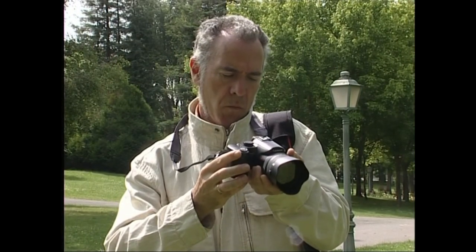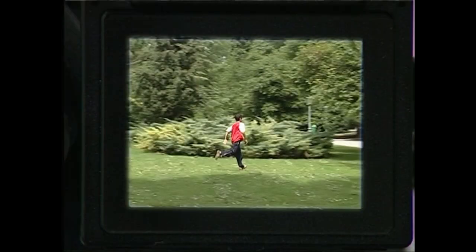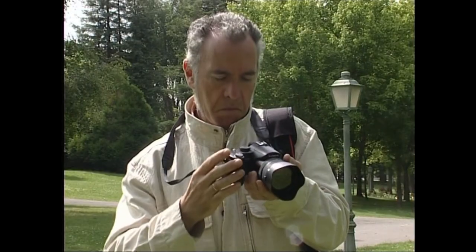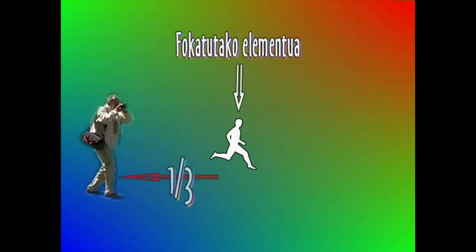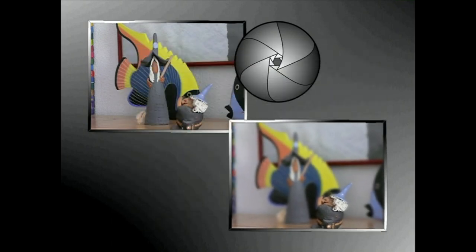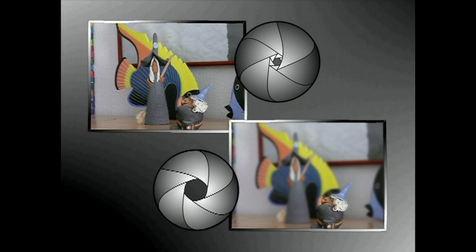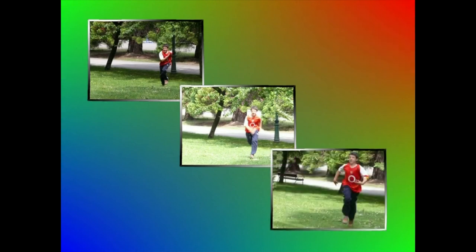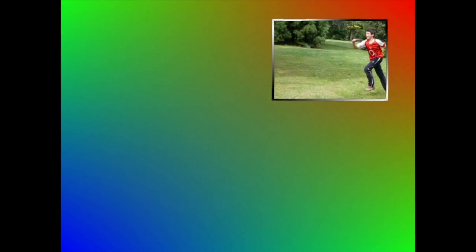Horrezaz gainera, gogoratu argazki laritza klasikoan bezala, diafragmaren irekidurak ezartzen duela eremu sakonera edo argazkiaren garbitasun gunea. Garbitasun gune hori fokatutako elementutik aurrerantz eren bat eta atzerantz bi eren luzatzen da. Beraz, diafragmaren irekidura zenbat eta txikiagoa izan, orduan eta eremu sakonera handiagoa izango dugu. Eta alderantziz, diafragmaren irekidura zenbat eta handiagoa izan, orduan eta eremu sakonera txikiagoa izango dugu. Obturazio lastertasuna eta diafragmaren irekidura konbinatuz, enkuadrearen tamaina eta barruan dagoena aldatu gabe, alde handiko argazkiak lor daitezke.